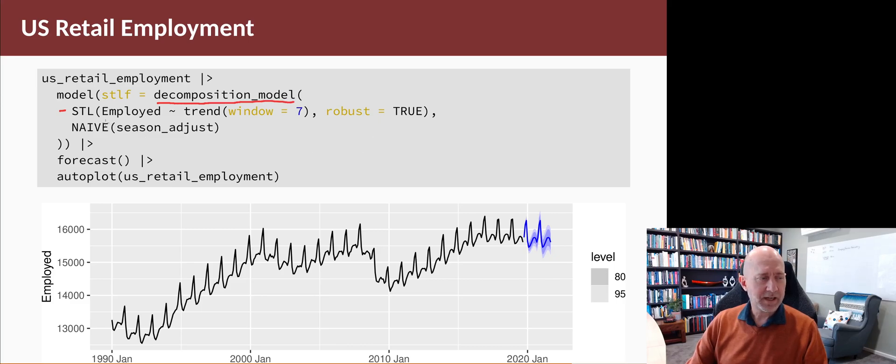Then the second argument is how you deal with the seasonally adjusted data—that one. I'm going to use a naive method for that. The third argument, which is not shown here, is how you forecast the seasonal component, the season_year component.